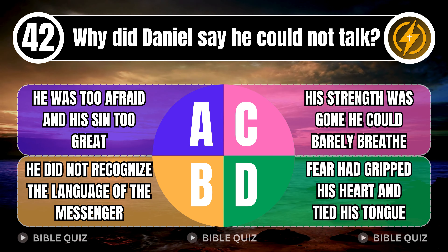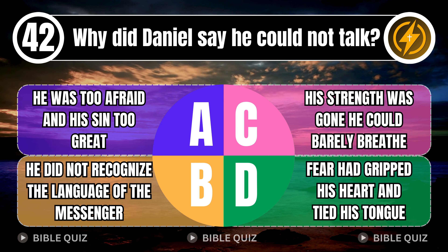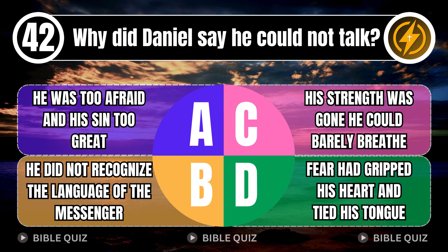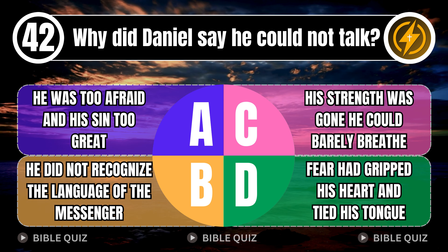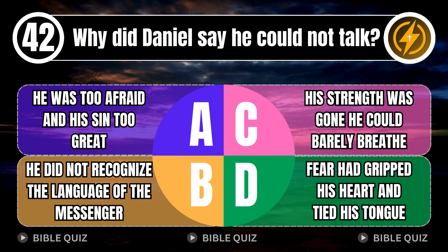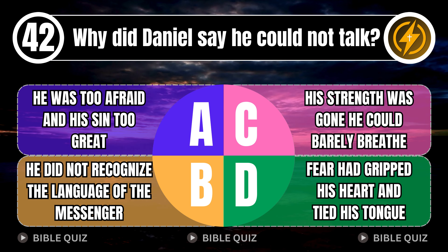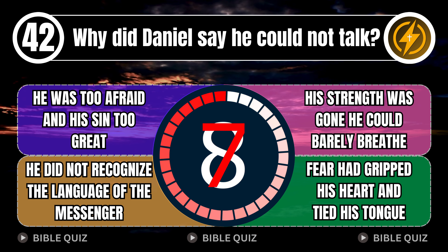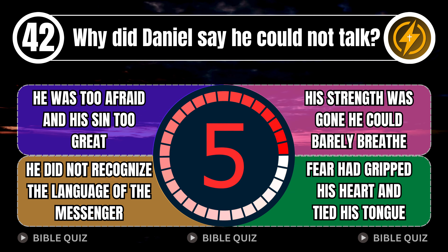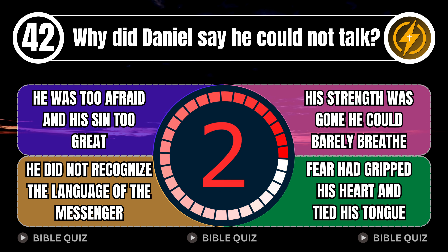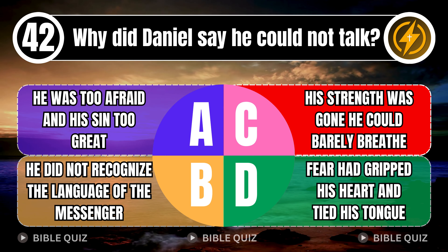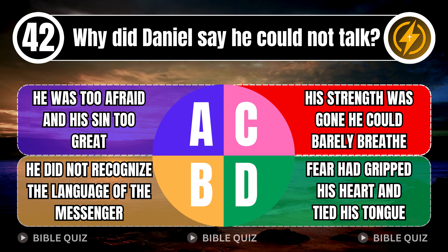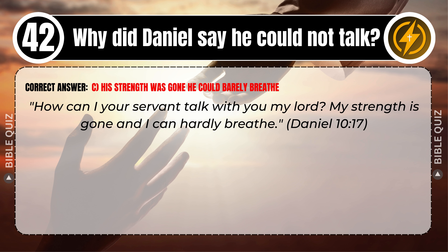Question 42: Why did Daniel say he could not talk? A. He was too afraid and his sin too great. B. He did not recognize the language of the messenger. C. His strength was gone and he could barely breathe. D. The fear had gripped his heart and tied his tongue. Correct answer: C. His strength was gone and he could barely breathe. 'How can I, your servant, talk with you, my Lord? My strength is gone and I can hardly breathe.' Daniel 10 verse 17.